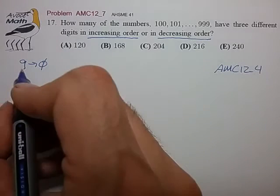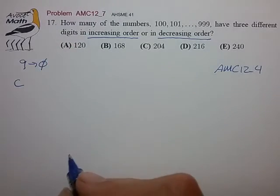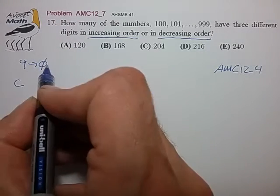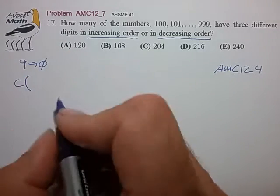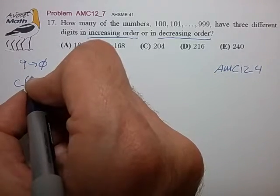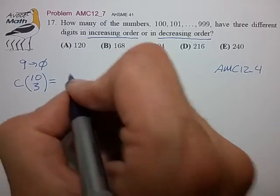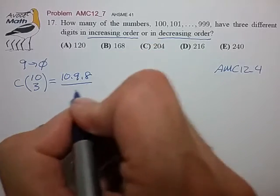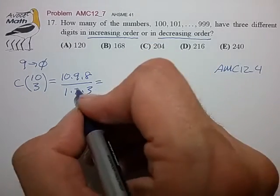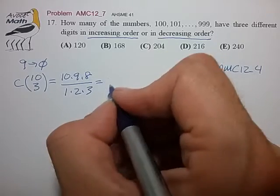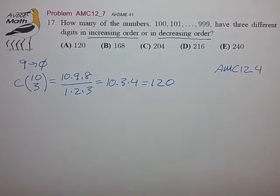So we essentially have the number of integers determined by the ways that we can choose three distinct objects from a set of ten distinct objects, and that of course from our combination math is C(10,3) which is 10 times 9 times 8 over 1 times 2 times 3, which is equal to 2 goes into 8, 3 goes into 9, 10 times 3 times 4 for a total of 120.